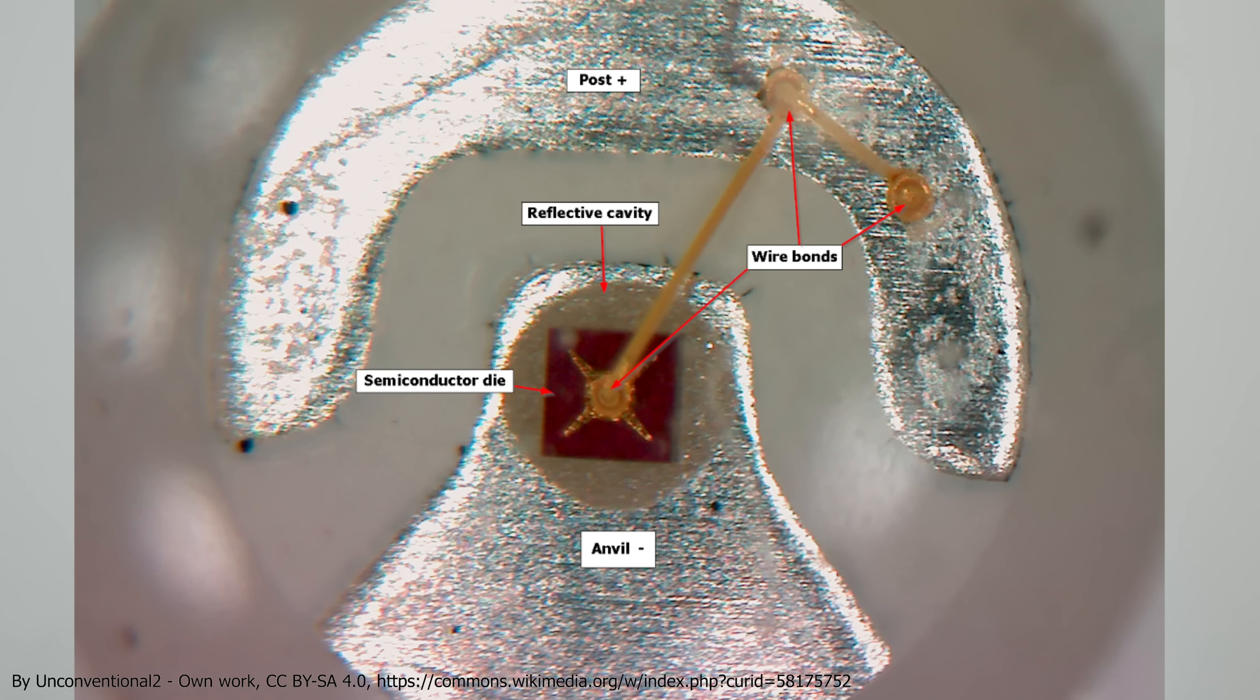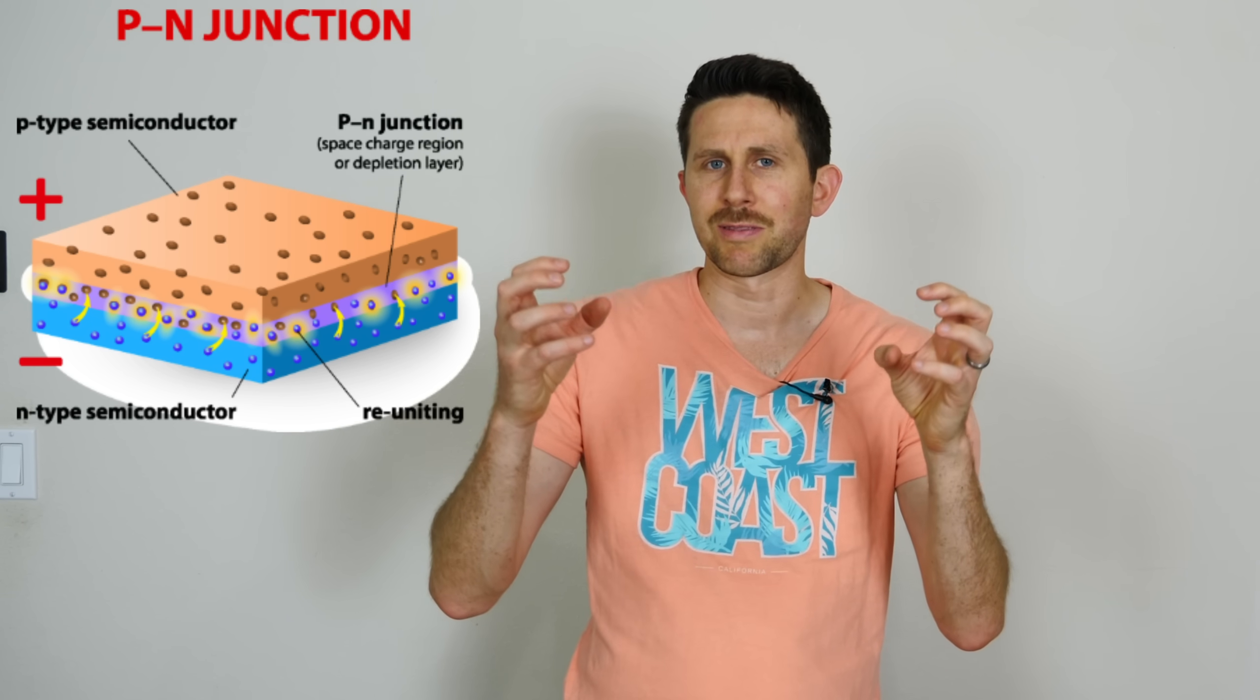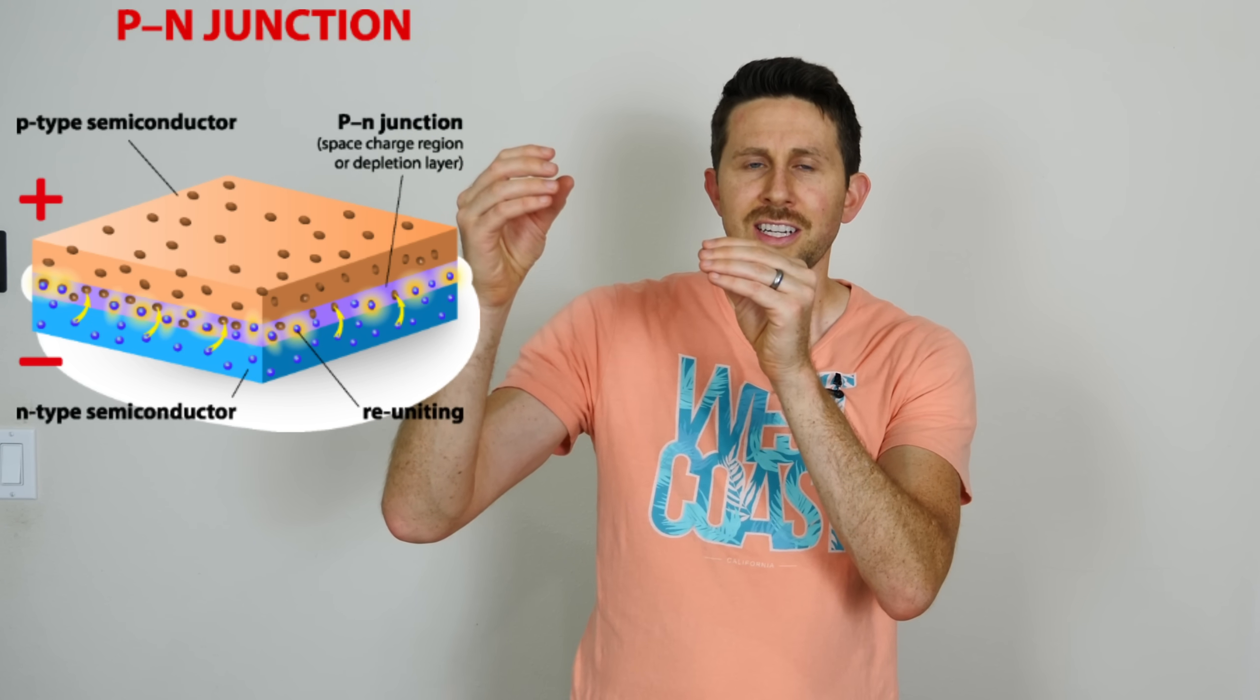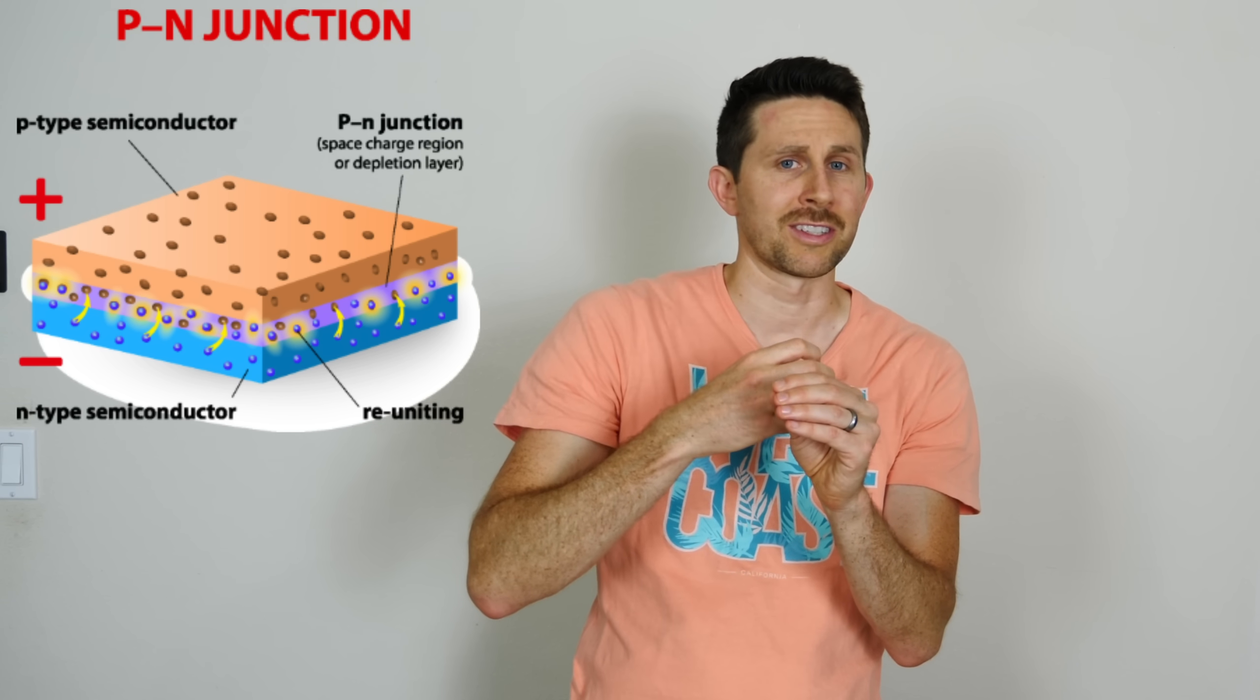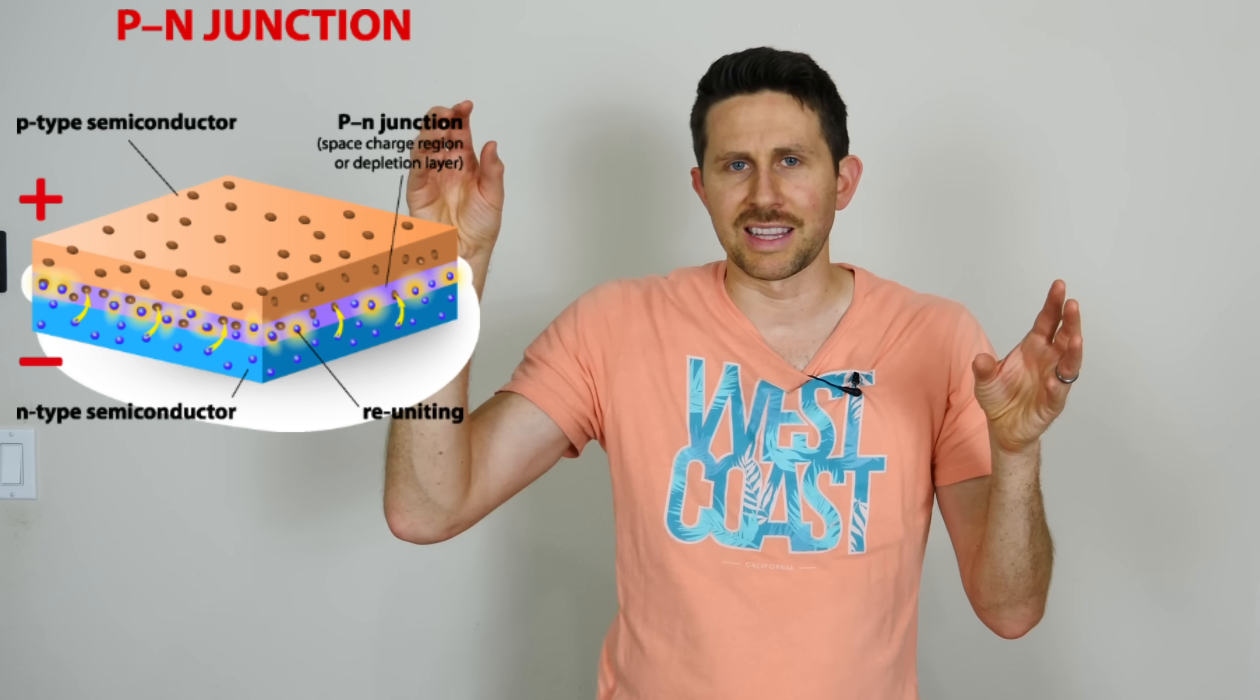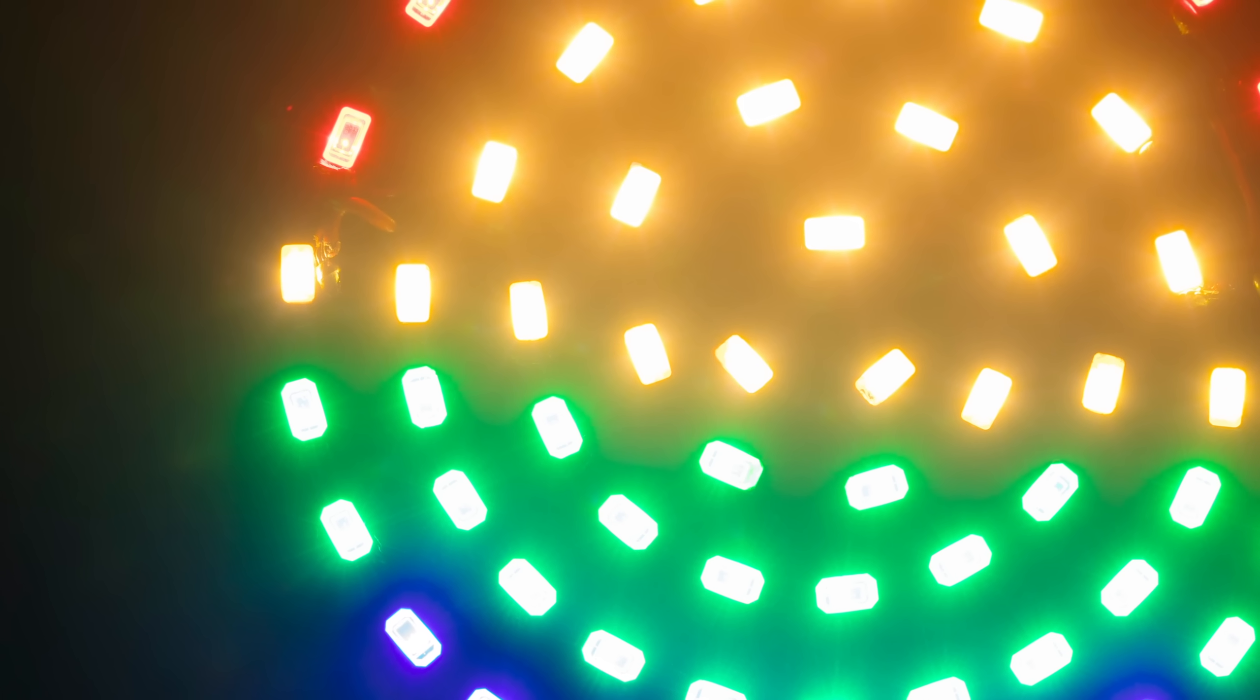So the way LEDs work, the part that produces light on them is made with semiconductors. Now there's different types of semiconductors called p-type semiconductors and n-type semiconductors, but the magic happens when you put both of those together. When you put both of those together, you can get electrons from the n-type semiconductor to fall down to a lower energy state, and when that happens, sometimes they can produce a photon of light.